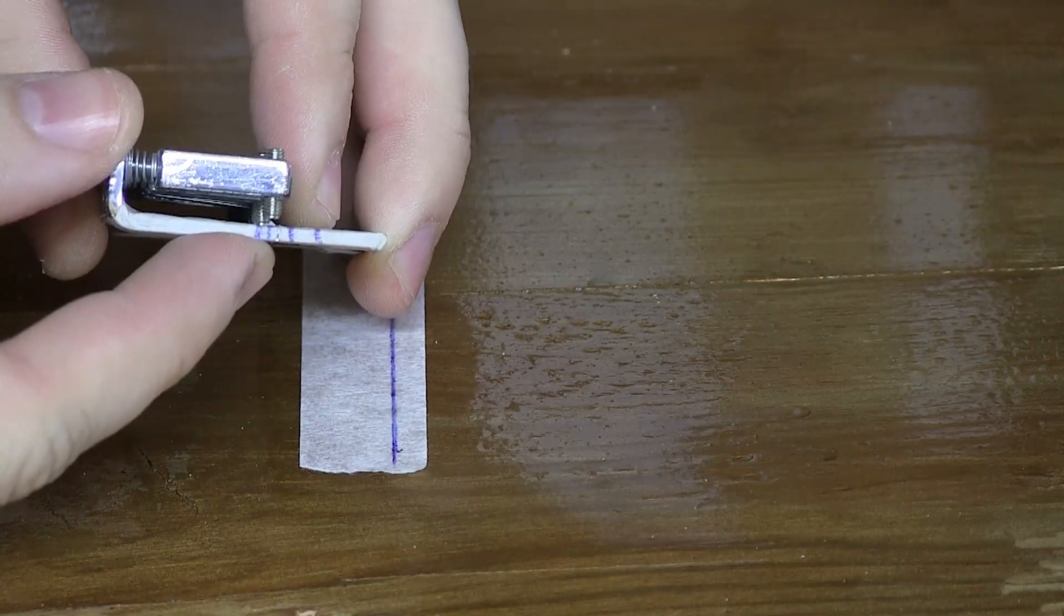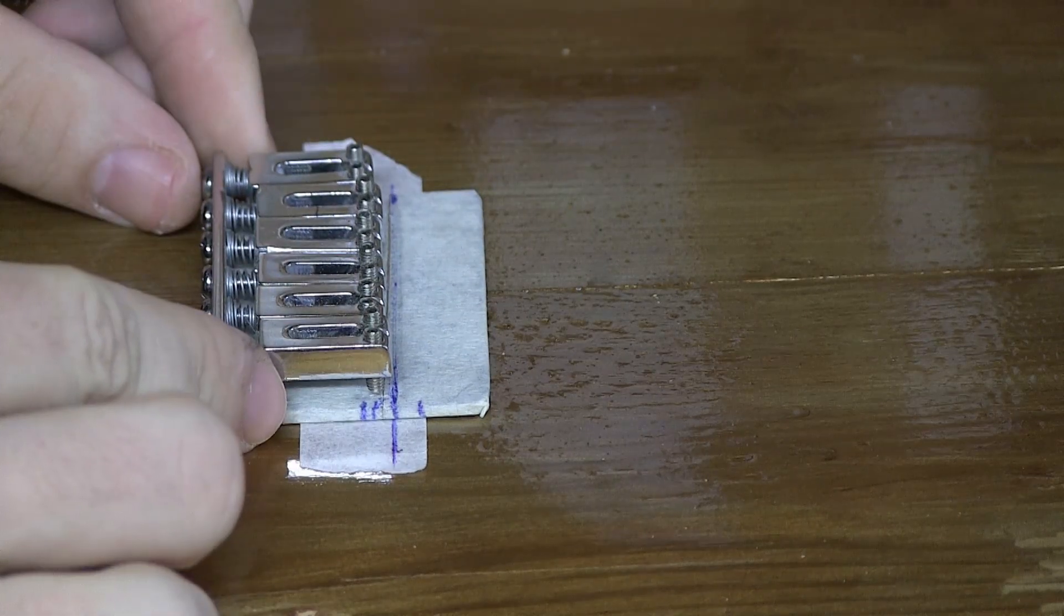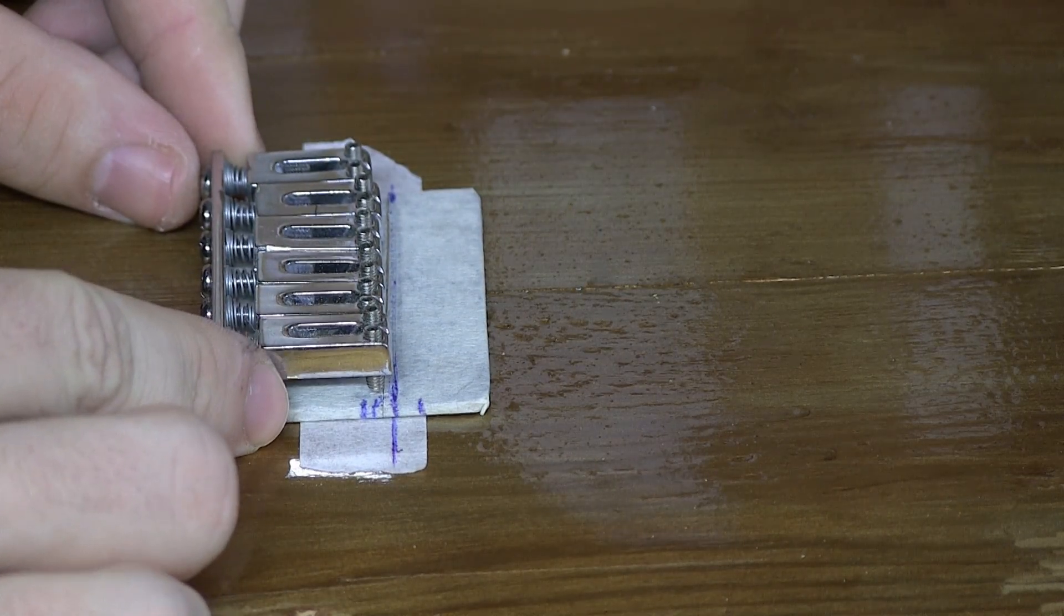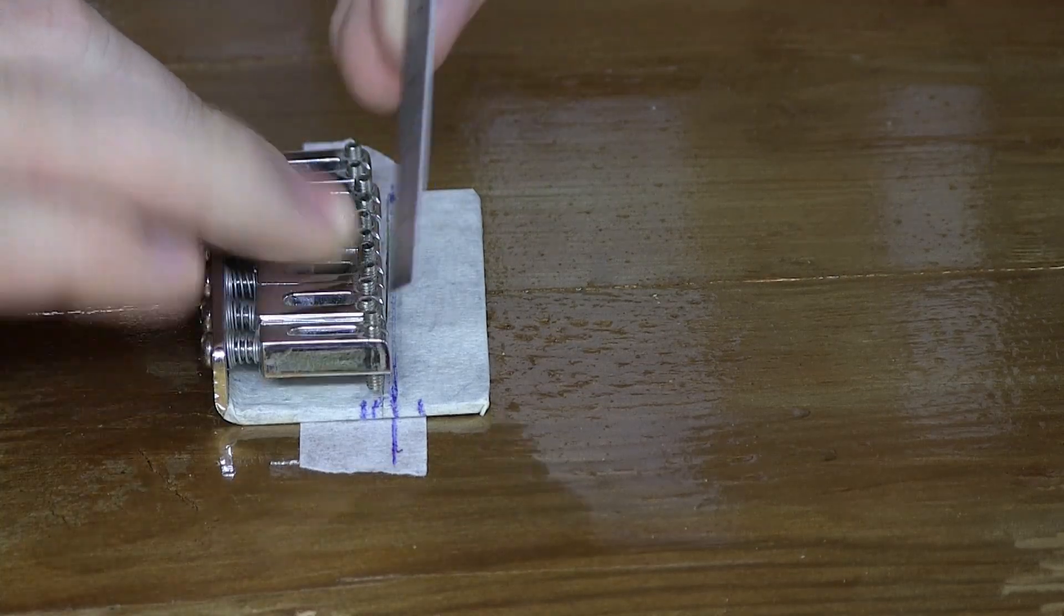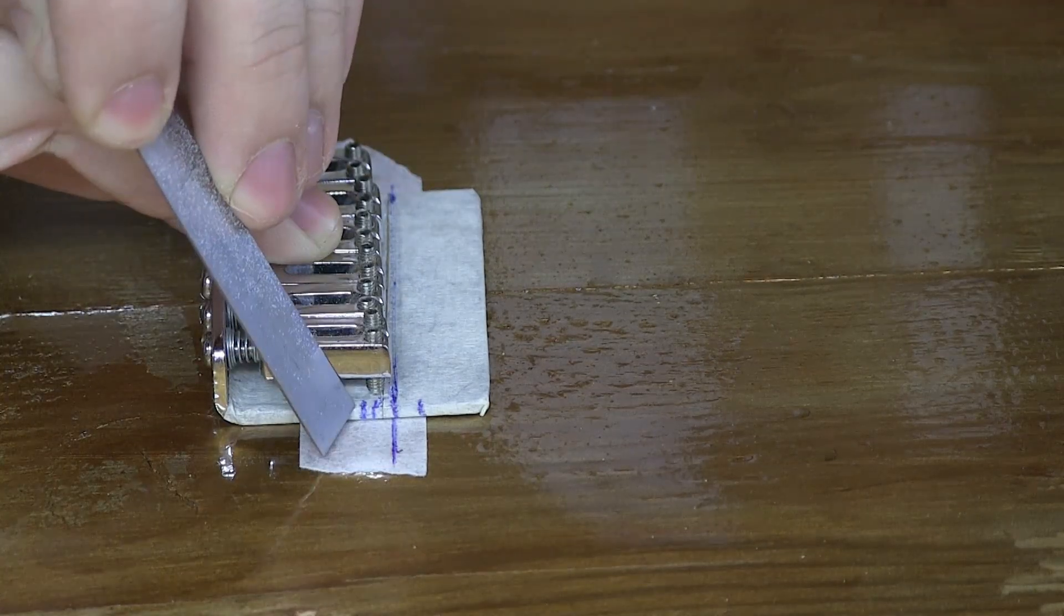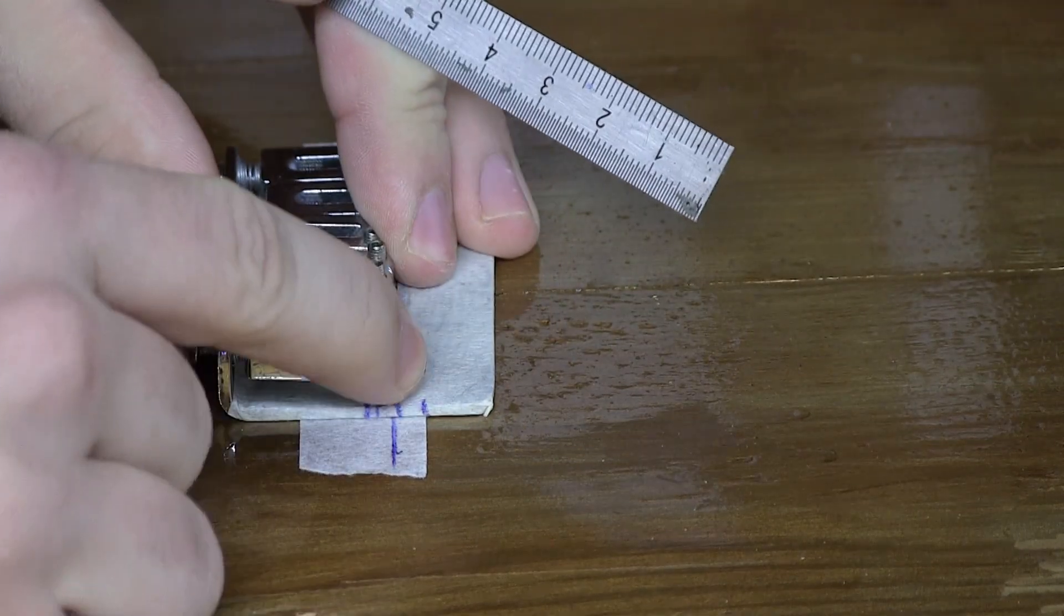And now that I have the mark for where the bridge is actually going to go, that's where I line it up with the line that I've drawn on the actual body. This will have the capacity of moving all the way back here and all the way around here. And that is how you do it.